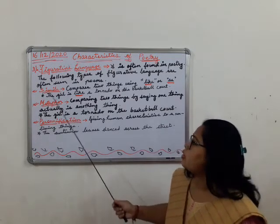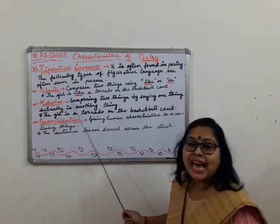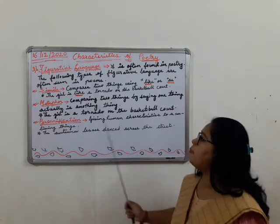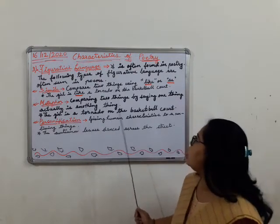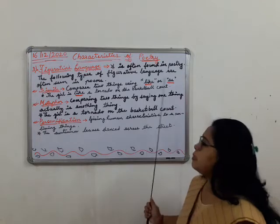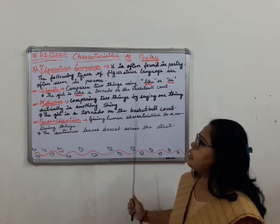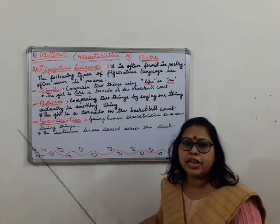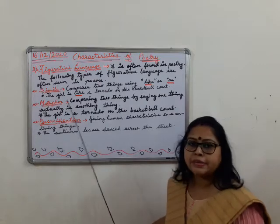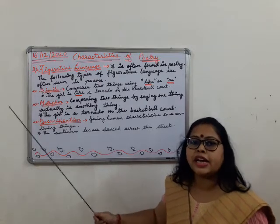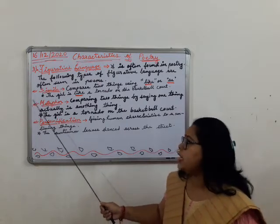So 'the girl is like a tornado' — here you can compare a girl with a tornado on the basketball court. This simile type of figurative language is used in poetry.